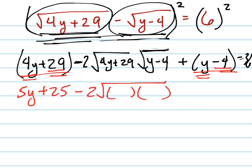I'm going to just go ahead and put these together, 4y plus 29. Let me make some more room here. 4y plus 29 and y minus 4. Since those are being multiplied together and they're both the same radical, which is really just a rational exponent, you can put them together underneath the radical, equals 36.